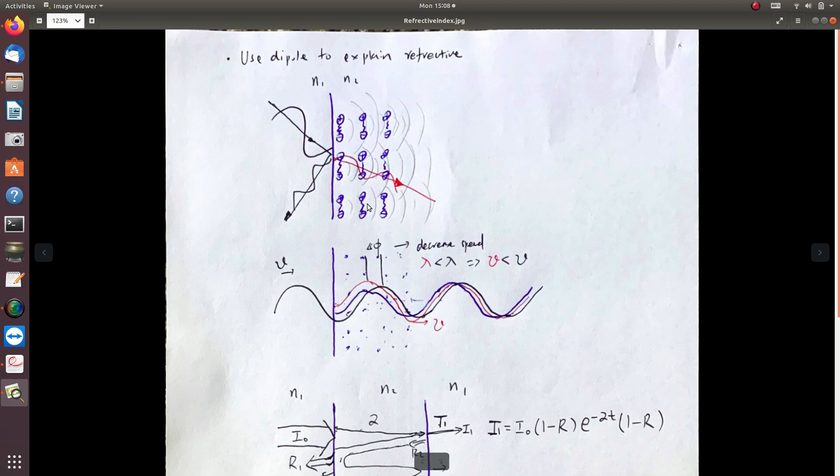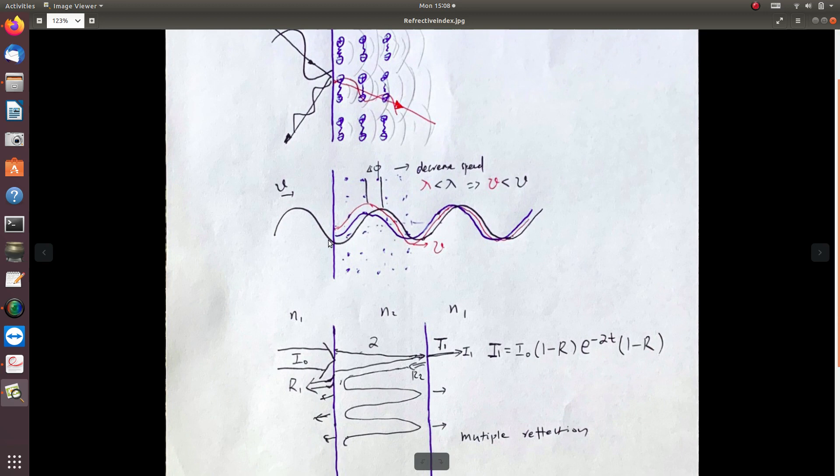It's very interesting. We can use the same dipole concept to explain why light travels at a different speed when it goes from one media to another, like from air to dense media. There are many dipoles. When there is incoming light, this is the primary light.